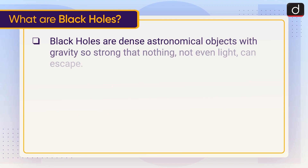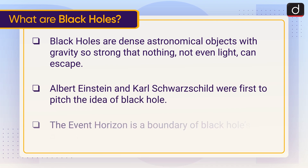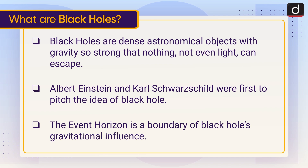Black holes are dense astronomical objects with gravity so strong that nothing, not even light, can escape. Albert Einstein and Karl Schwarzschild were the first to pitch the idea of a black hole. The event horizon is the boundary of a black hole's gravitational influence.